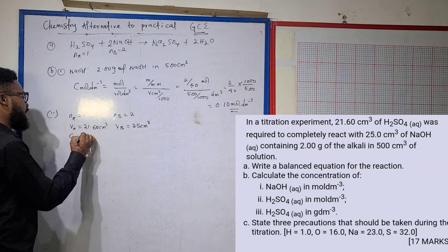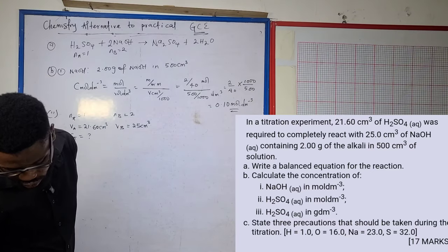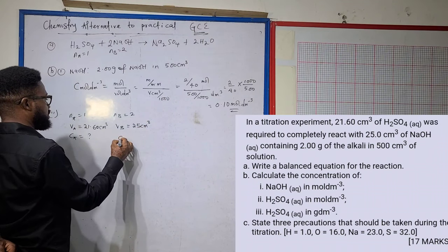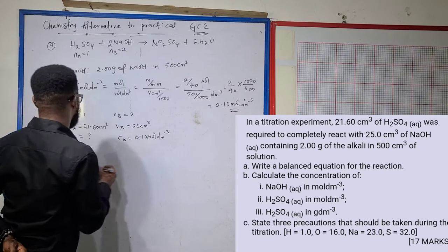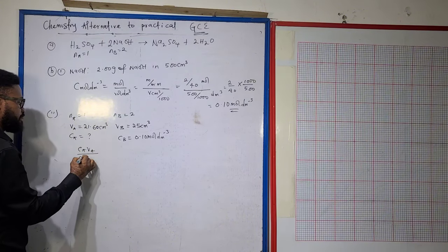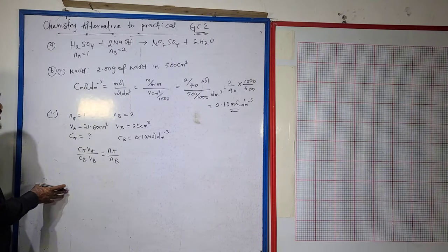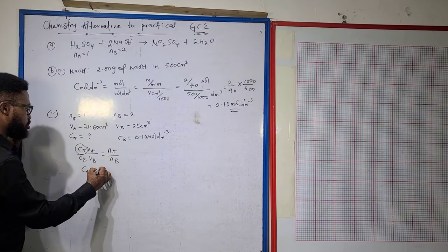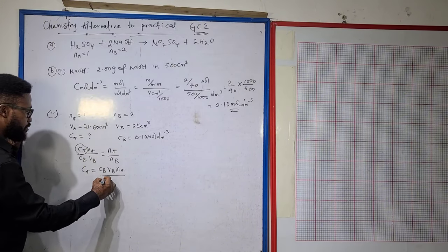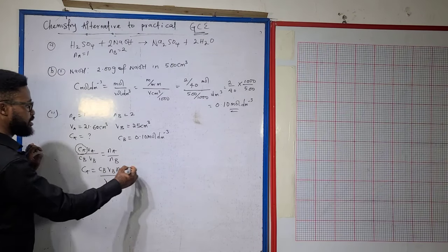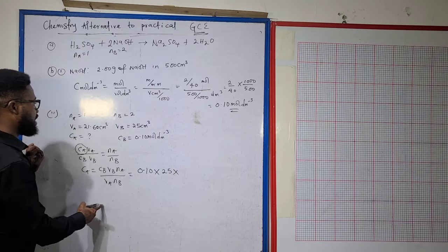Looking for the concentration of the acid Ca, I already have Cb from b1 at 0.10 moles per dm³. Using the formula CaVa divided by CbVb equals Na over Nb, my Ca is going to be Cb times Vb times Na divided by Va times Nb.